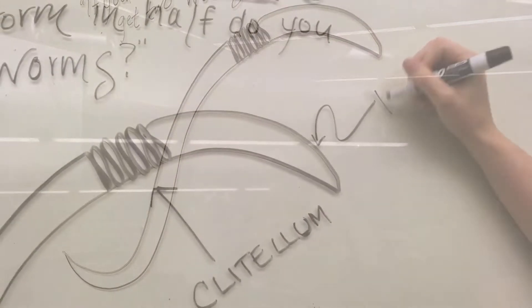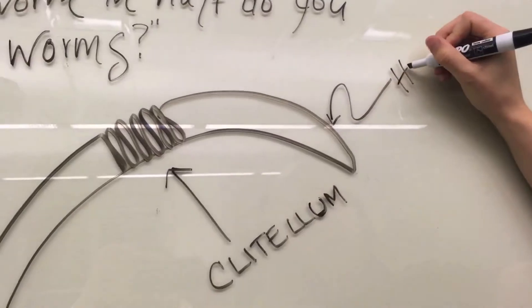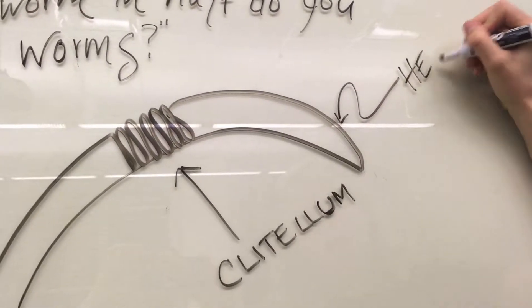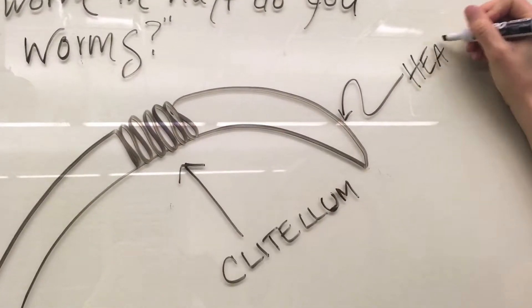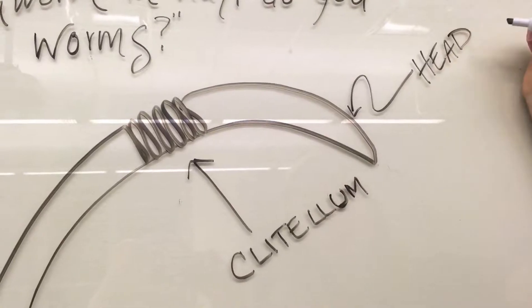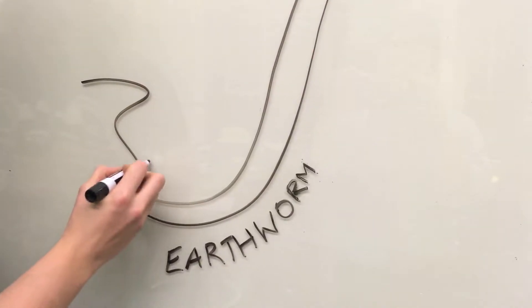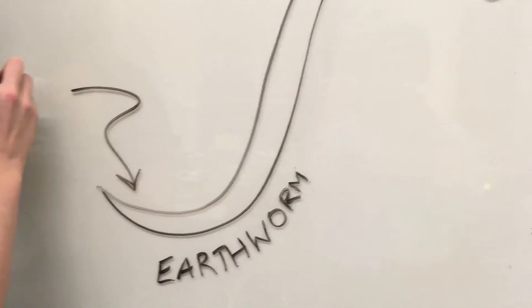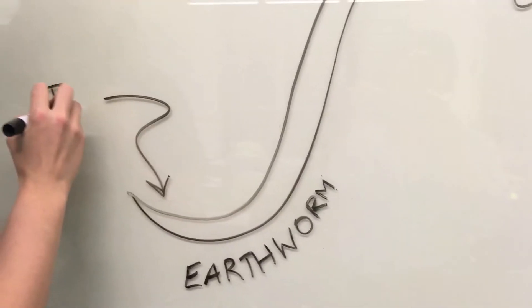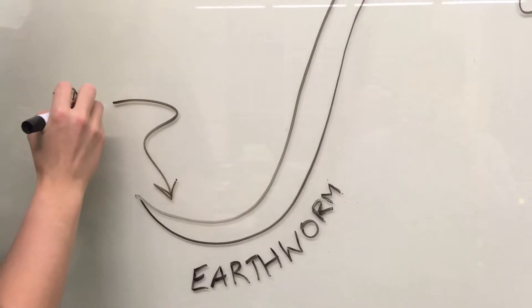However, there is a type of worm that puts the earthworm's regenerative ability to shame, the planarian flatworm. This invertebrate, which belongs to a separate phylum from earthworms, is able to reform its entire body from slivers of the animal's original body size. When the planarian regrows its head after decapitation, the creature remarkably keeps all of its old memories.